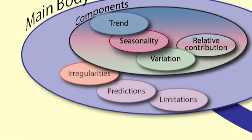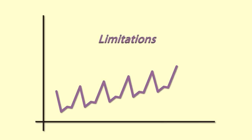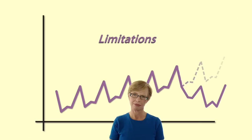Regarding the limitations of the analysis, explain how time series models use only the values in the series to predict. If there is a change in circumstances, this cannot be predicted.